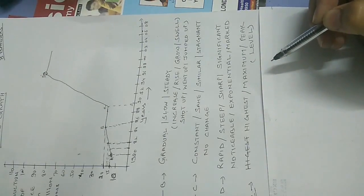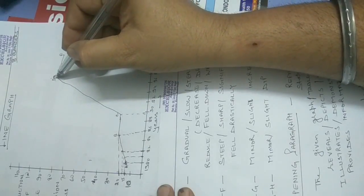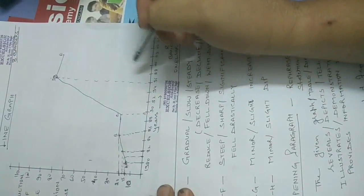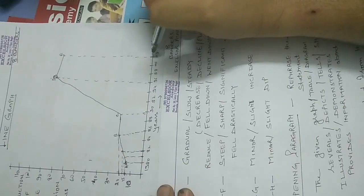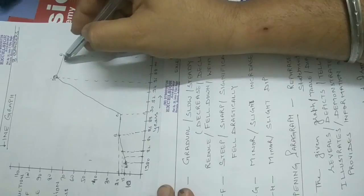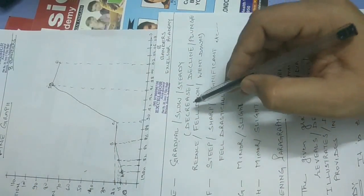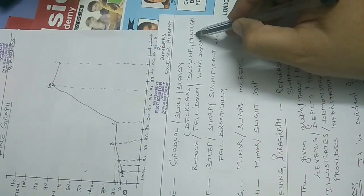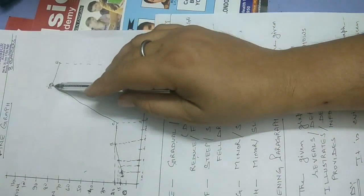After D the production starts going down. Let's say the highest level is attained in 1996, and after 1996 it starts going down. This is point E — for the next 6 years it has gone down gradually. This kind of change is a decline, and we can use the same slow and steady descriptors. Instead of incline, since it is a decline, we use words like: decrease, decline, plunge, reduce, fell down, went down.